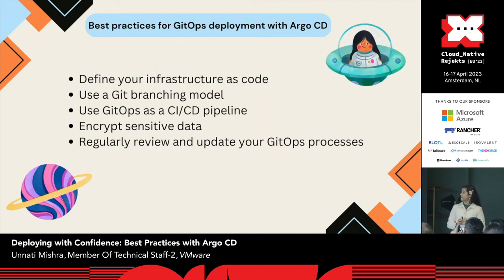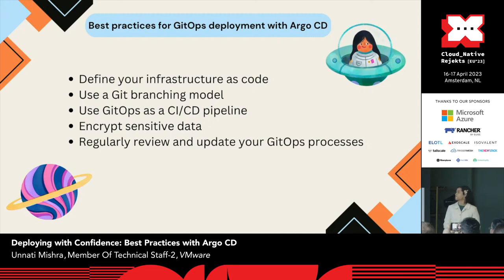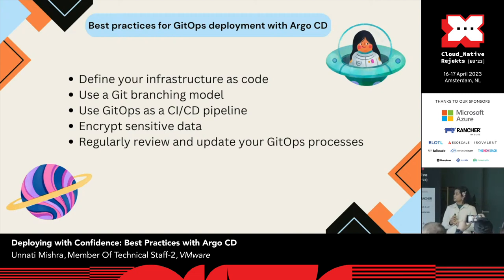Best practices for GitOps deployment with Argo CD: Define your infrastructure as code — store all your configuration in a Git repository using a Git-based branching model, making it easy for everyone to collaborate. Deploy only after testing; changes made directly to the cluster should be tested first. Encrypt sensitive data using password management systems like APIs and other tools so no third party can access it. And regularly review and update the GitOps process to stay current with updates.